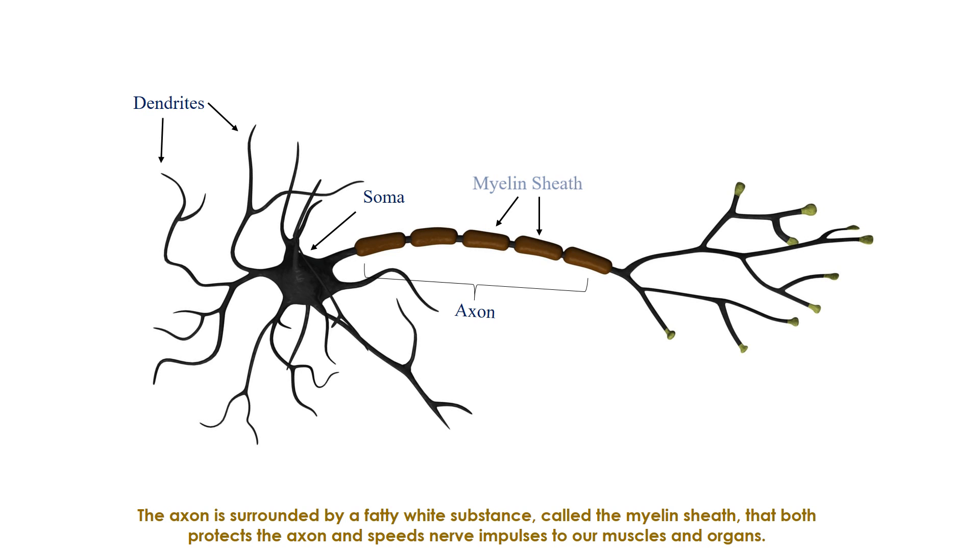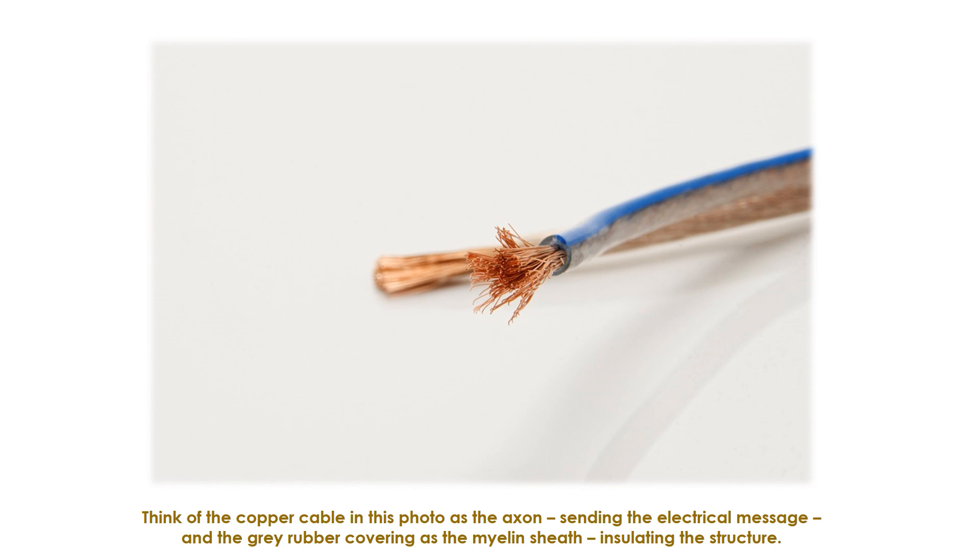The axon is surrounded by a fatty white substance, called the myelin sheath, that both protects the axon and speeds nerve impulses to our muscles and organs. Think of the copper cable in this photo as the axon, sending the electrical message, and the gray rubber covering is the myelin sheath, insulating the structure.